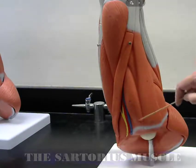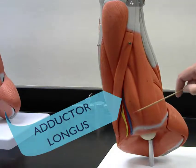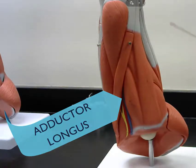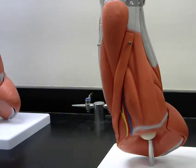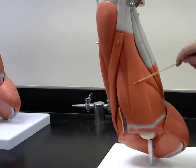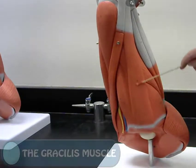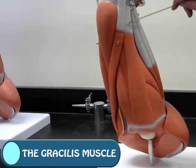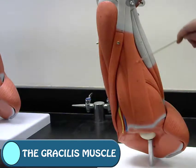Here is the adductor longus. The adductor longus. This muscle here that lies directly at the inner thigh is the gracilis muscle. The gracilis muscle.